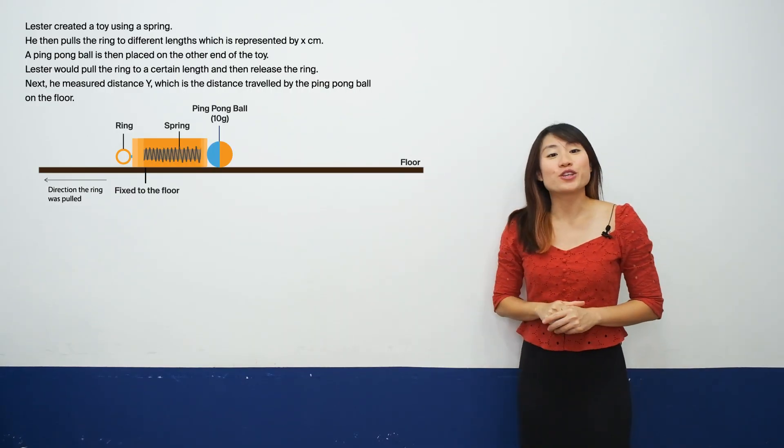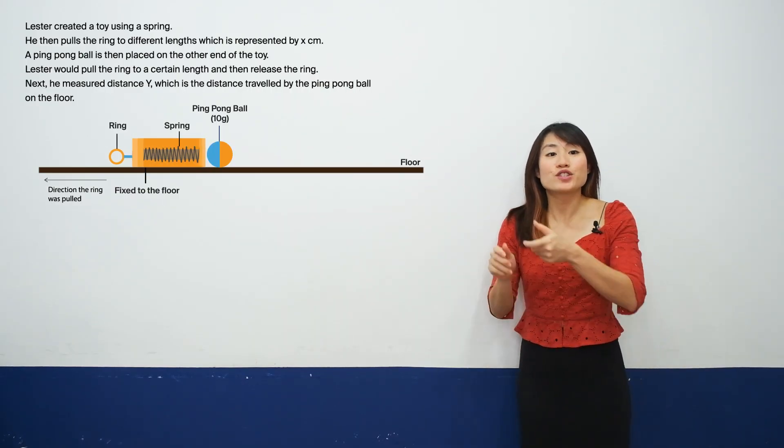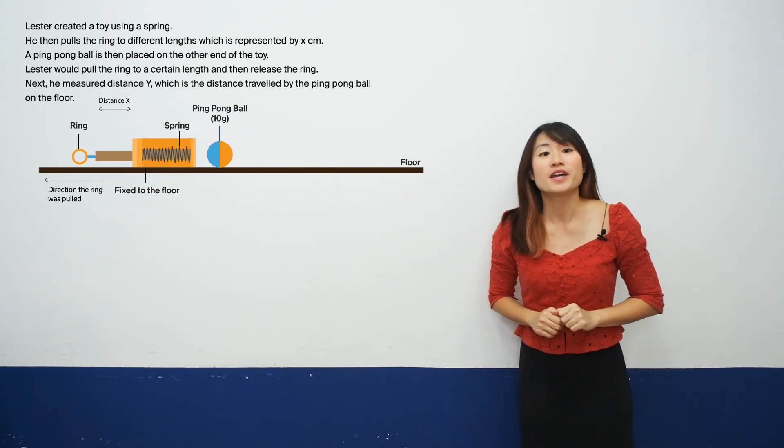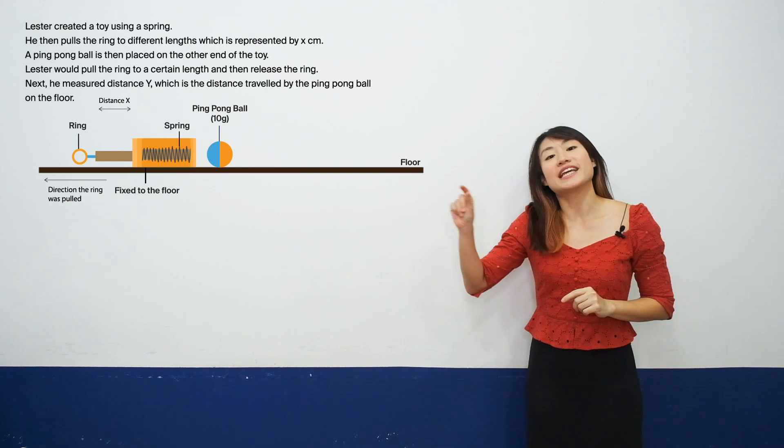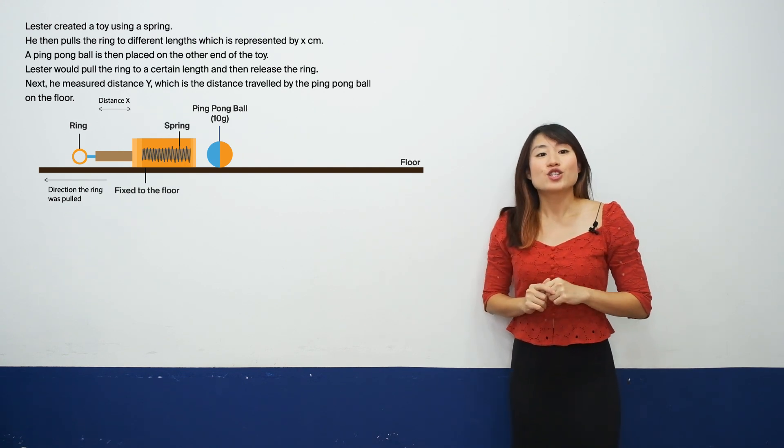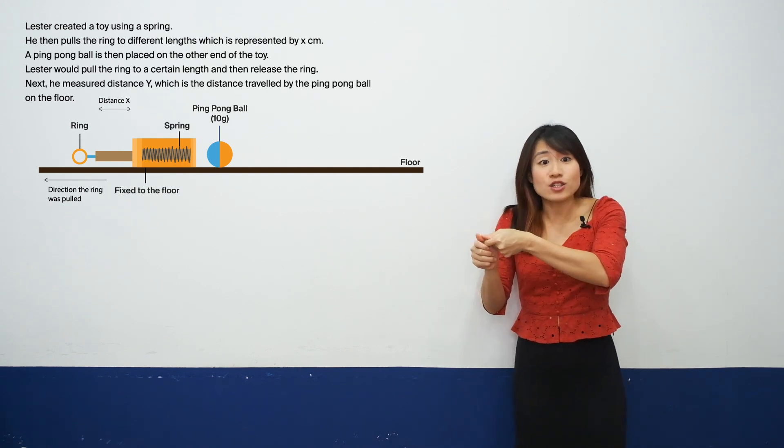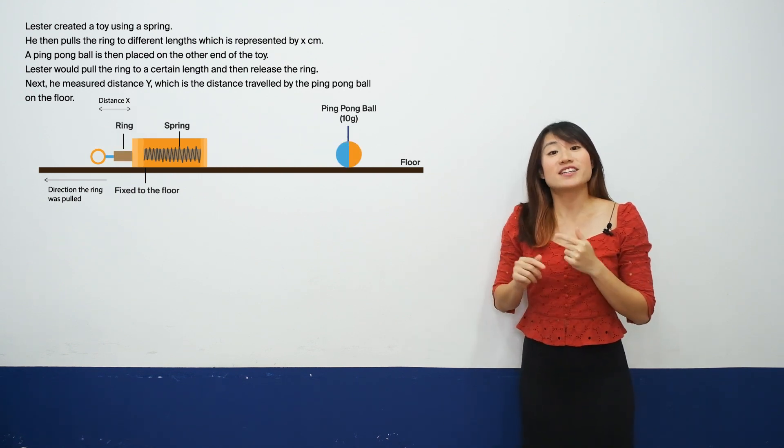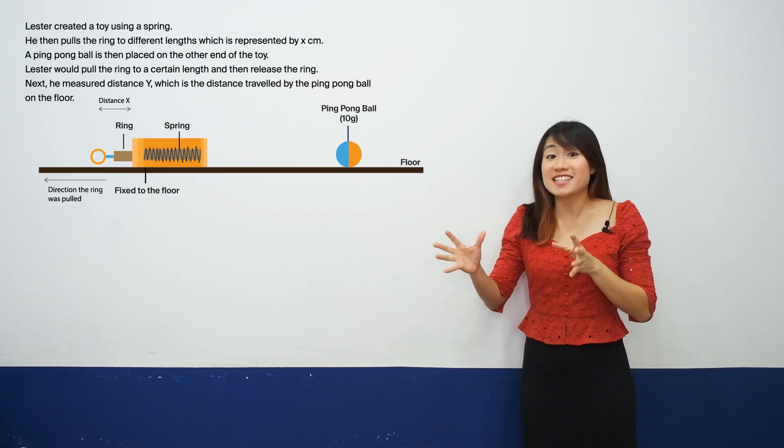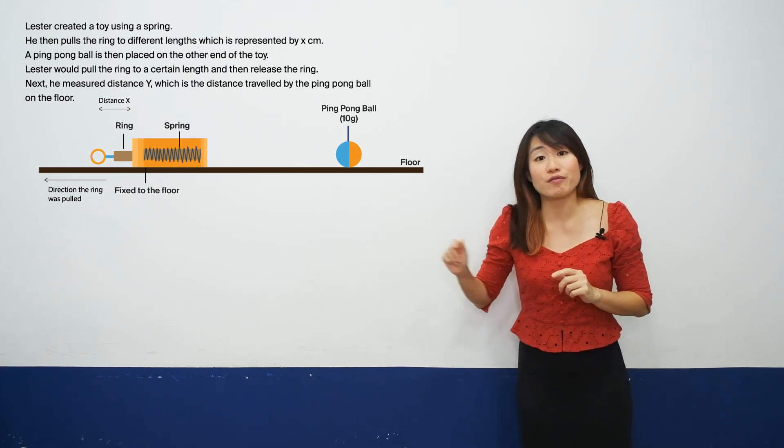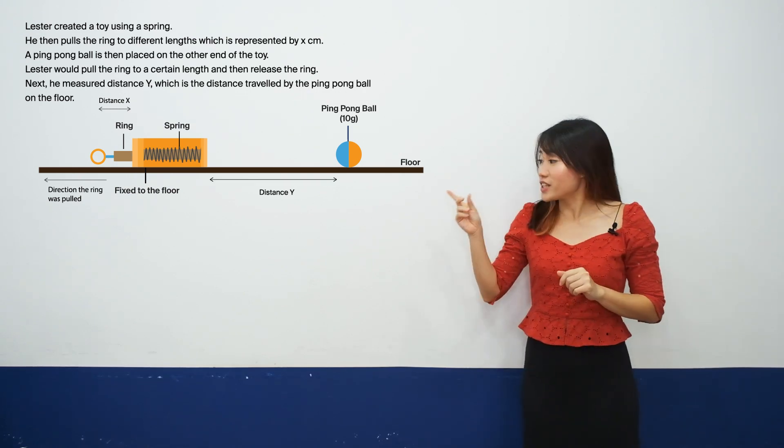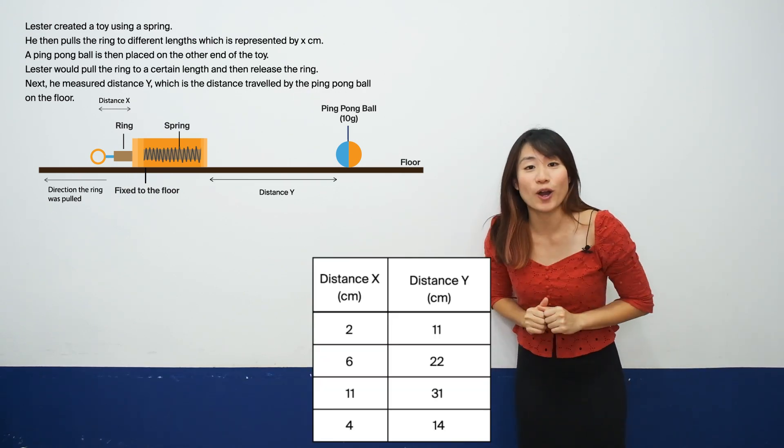Lester created a toy using a spring. He then pulls the ring to different lengths which is represented by X cm. A ping pong ball is then placed on the other end of the toy. Lester would pull the ring to a certain length and then release the ring. Next, he will measure the distance that the ball travels which is represented by distance Y. So here are the results that he recorded.